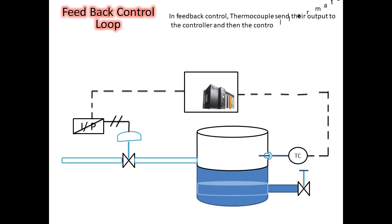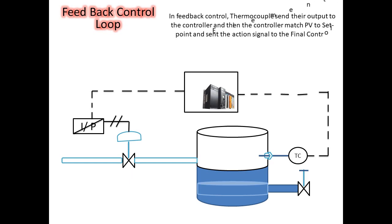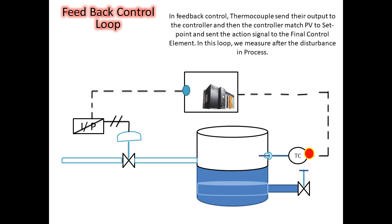In the feedback control loop, the thermocouple sends its output to the controller, and then the controller matches the process variable to the setpoint and sends a signal to the final control element. In this loop, measurement is taken after the disturbance in the process.